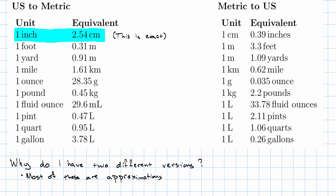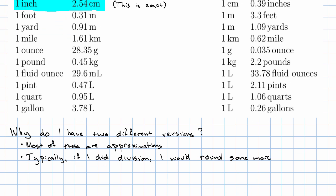Well, typically when I do division, I don't get an exact answer. So if I did division, I would round some more. Plus, of course, if we're doing division by hand, it's tedious. So I have these two different versions of my conversion factors so that I never have to round.